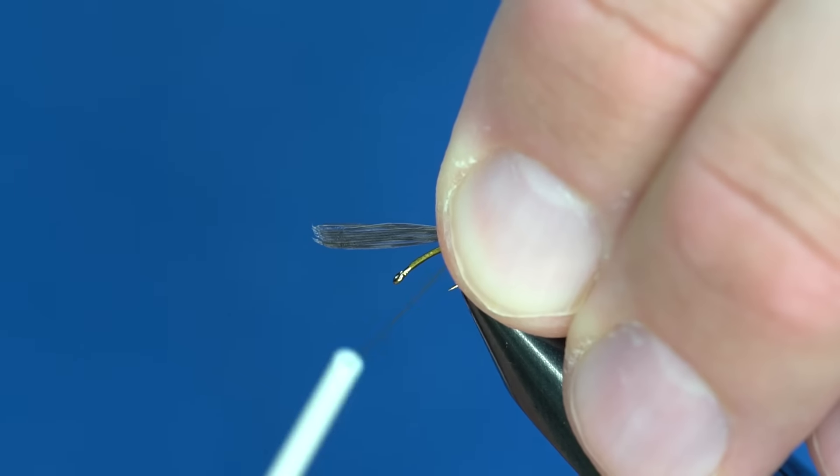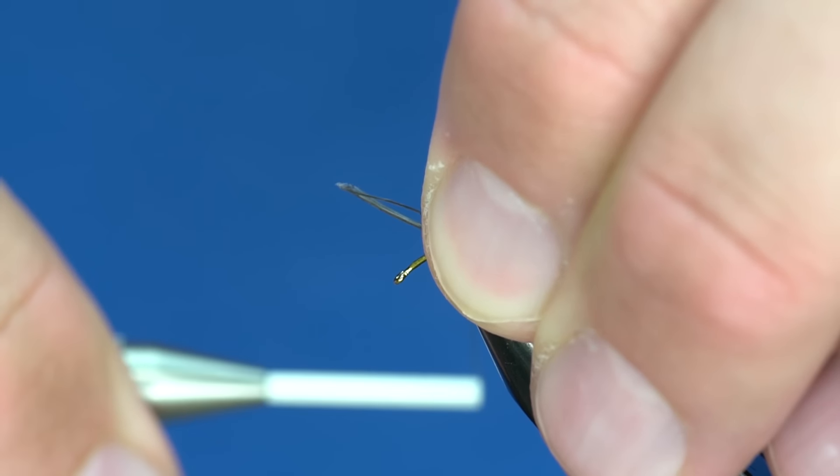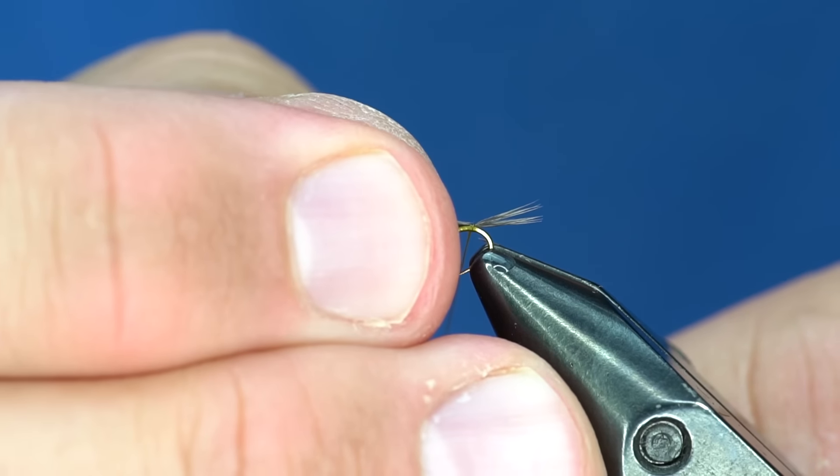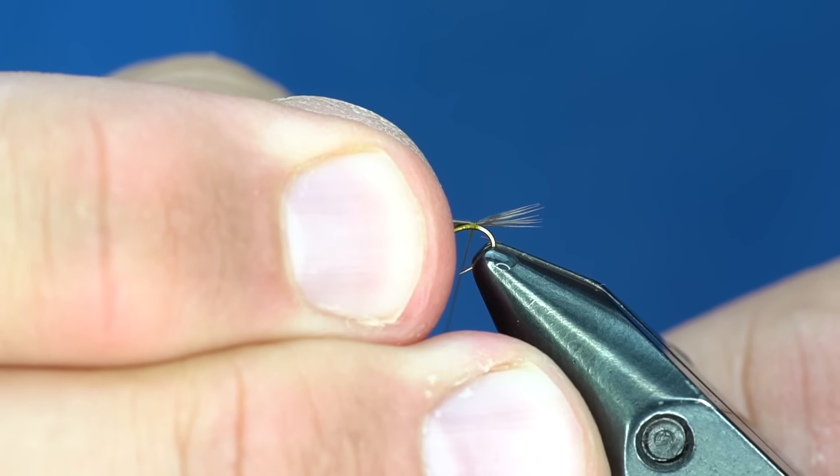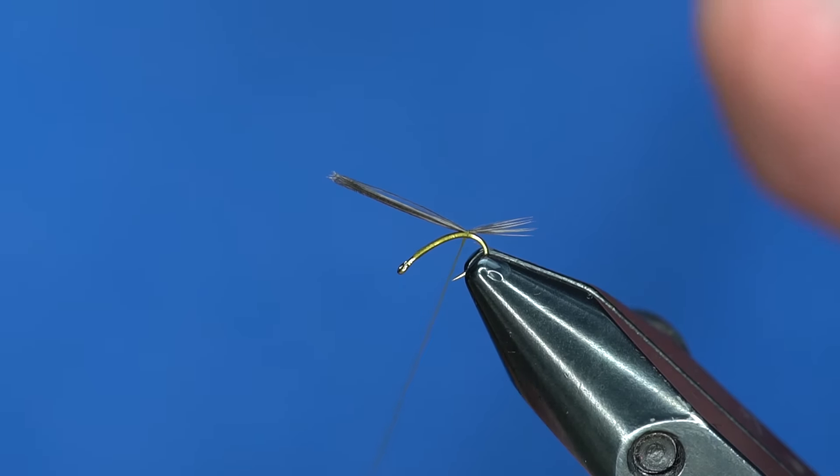I'm going to pinch that with my off hand and just tie that down with a few wraps. Maybe even shorten that up a little bit by wiggling those. There we go. That's our tail on this fly.